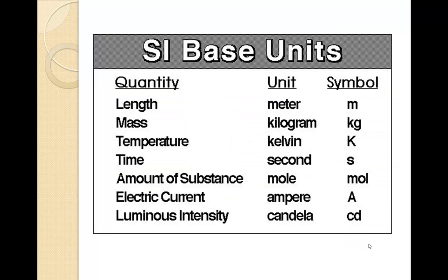Here's a list of the SI base units. Length is in meters. Mass is in kilograms — chances are you're not as familiar with those, so you need to remember that. Temperature is in Kelvins, and we're going to talk about that in a little bit and how they compare to Celsius and Fahrenheit. Seconds is time. The amount of a substance is a mole, which you're going to be using a lot in chemistry. The electric current is the ampere, and the luminous intensity is the candela.